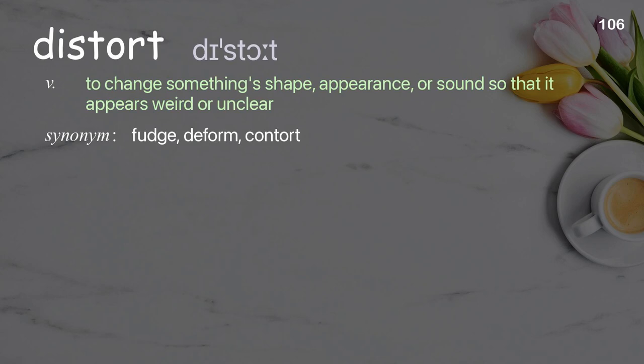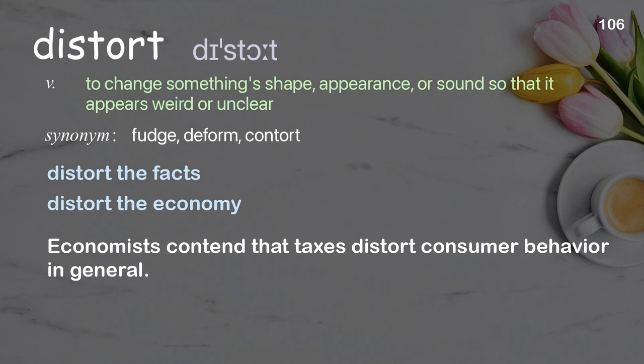Distort: to change something's shape, appearance, or sound so that it appears weird or unclear. Examples: distort the facts; distort the economy. Economists contend that taxes distort consumer behavior in general.